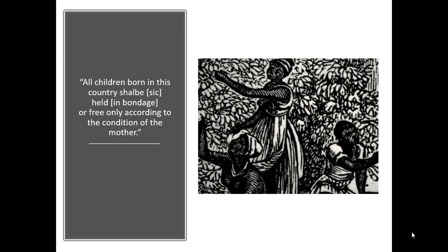Going back to our quote: by creating a law that said the condition of a child follows the condition of the mother, that meant if your mother was a slave, so were you. It didn't matter that your father was white. If your mother was black, so were you. So how do we define black? In those days, it was called the one-drop rule — if it could be determined that you had one drop of black blood, you were considered black, even if you appeared to be white.